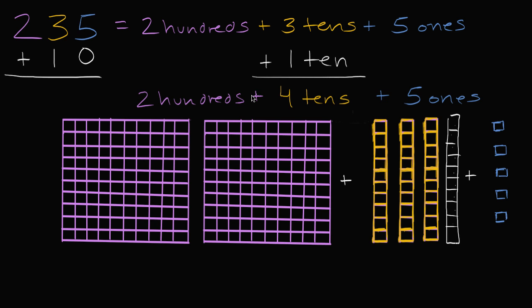So now it's going to be 2 hundreds plus 4 tens plus 5 ones. Well, what's that going to be? 2 hundreds plus 4 tens plus 5 ones equals 245.